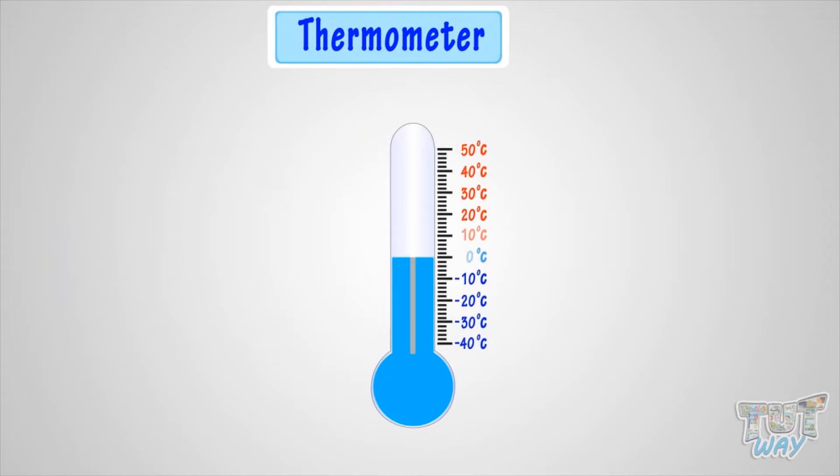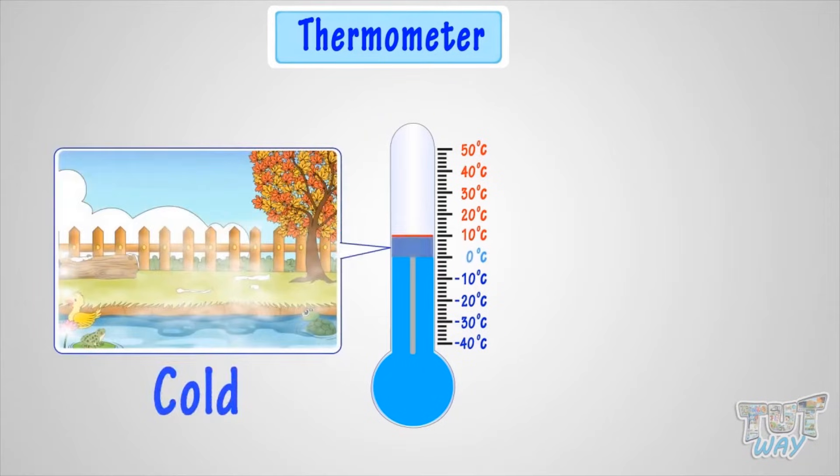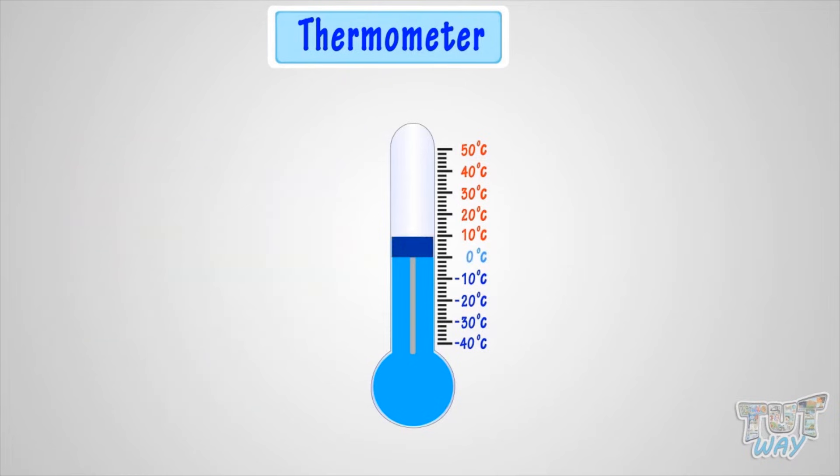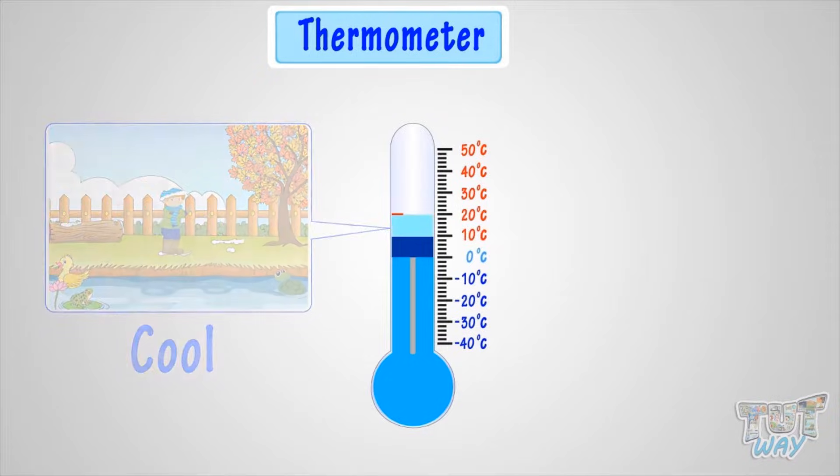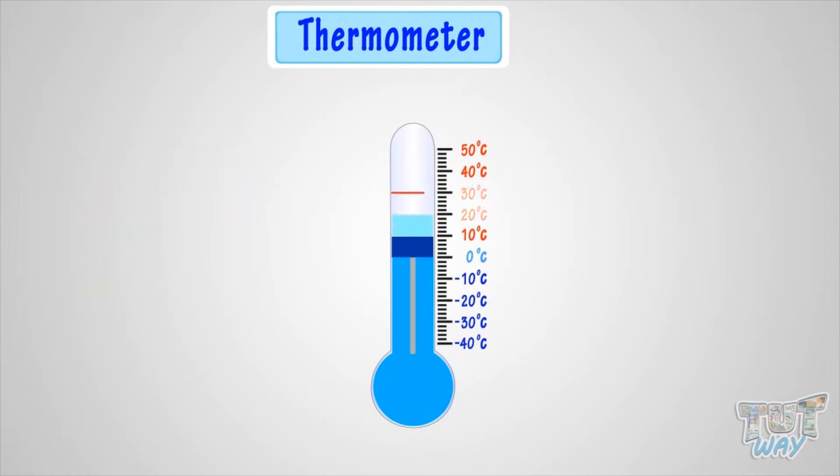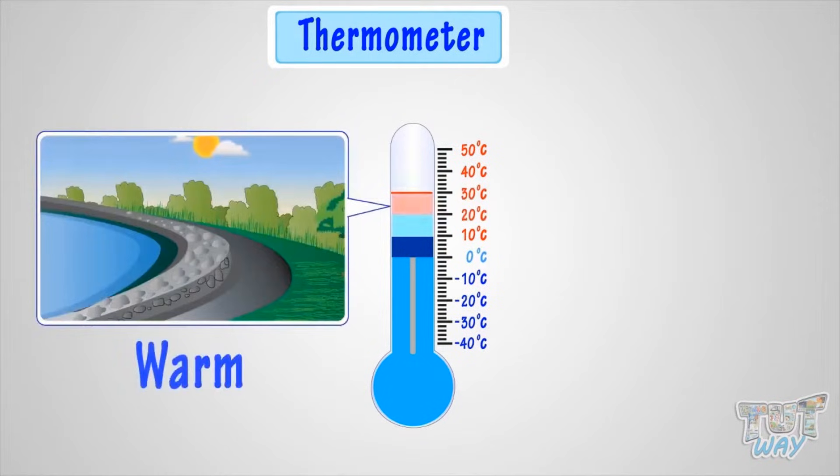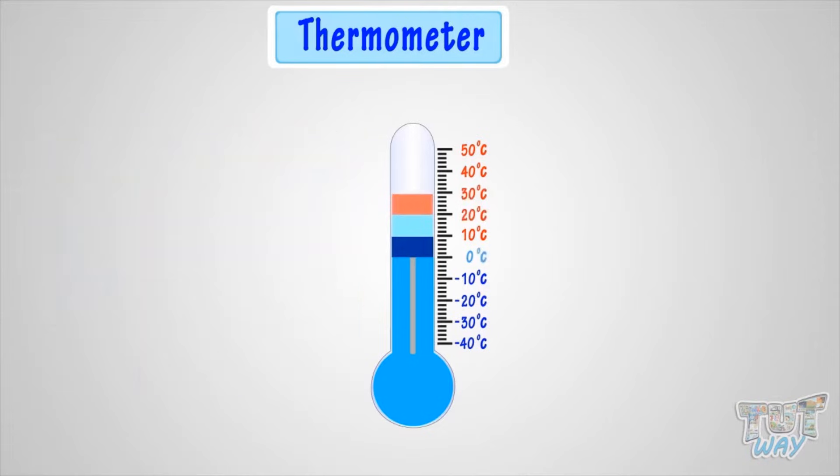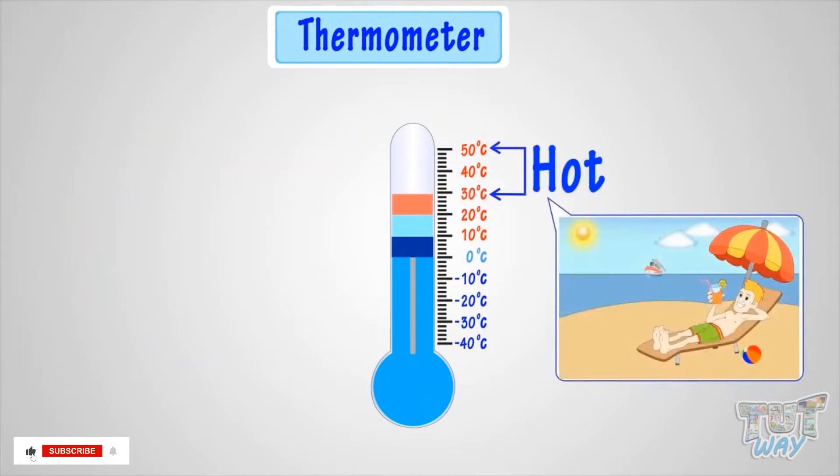Zero to ten degrees Celsius is cold. Ten to twenty degrees Celsius is cool. Twenty to thirty degrees Celsius is warm. And thirty degrees Celsius and up is hot.